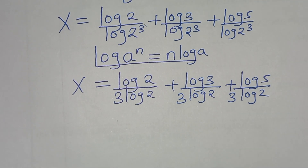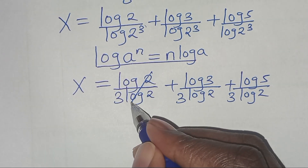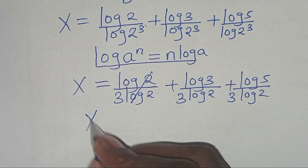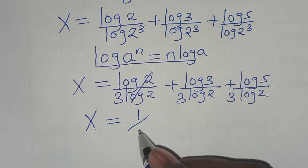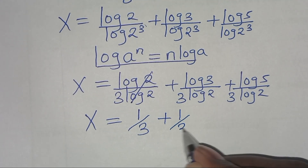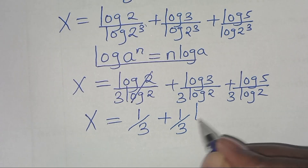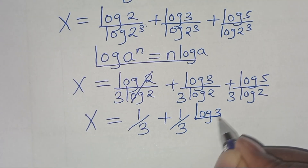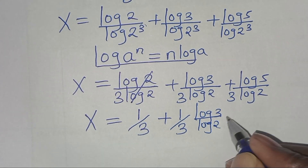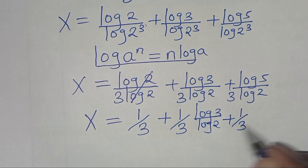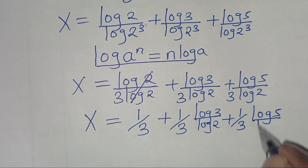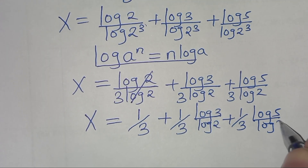So this implies that log 2 and log 2 simplify, so that we have x equal to 1 over 3, plus 1 over 3 times log 3 over log 2, then plus 1 over 3 times log 5 over log 2.